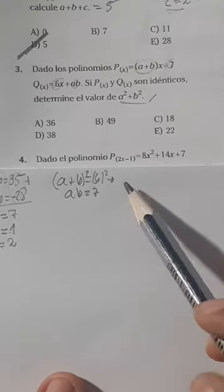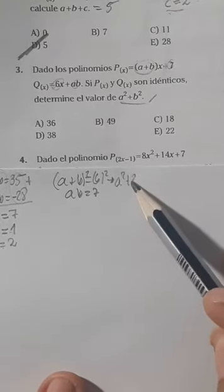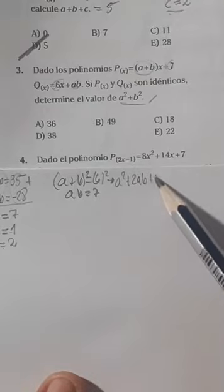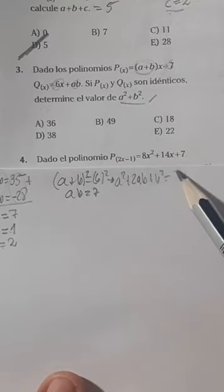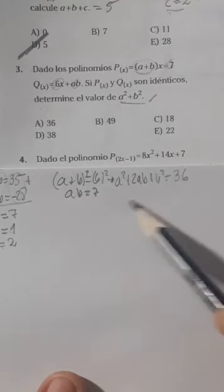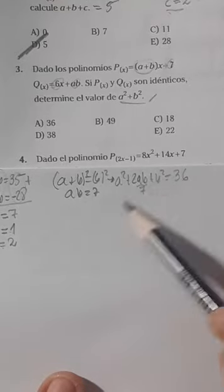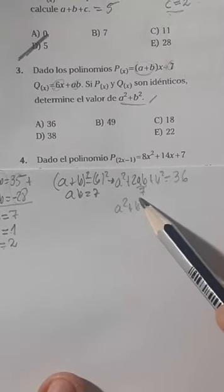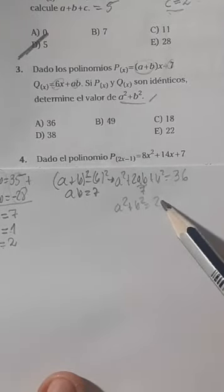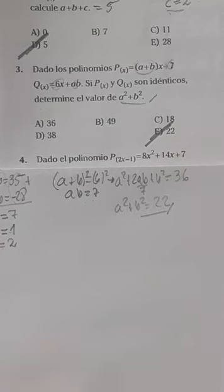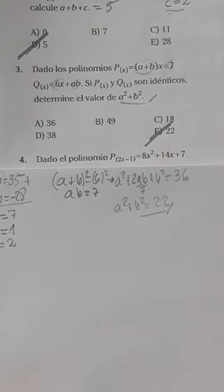A al cuadrado más el doble del producto de los dos más el segundo al cuadrado. ¿Cuánto te sale? Te sale 36. Pero A·B vale 7, entonces 2 por 7 es 14. ¿Qué pasa al otro lado? Pasa a restar. ¿Y cuál sería tu respuesta? Tu respuesta sería 22.